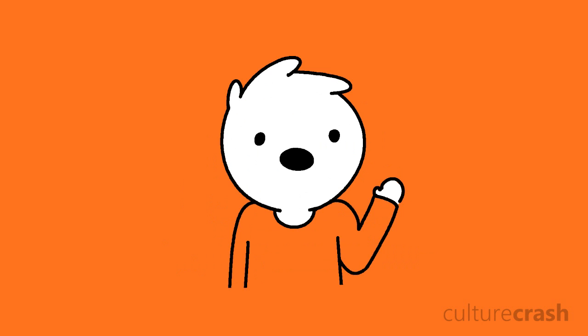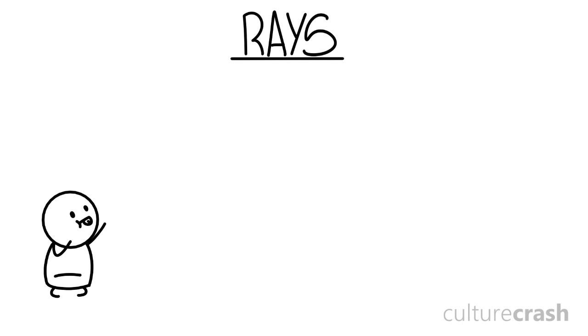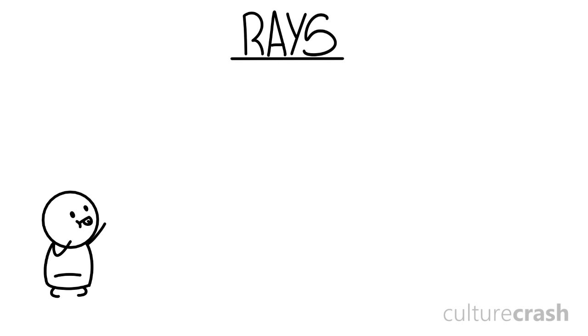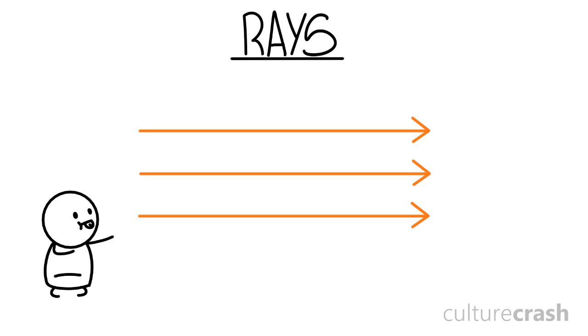To explore how light interacts with different mediums, it's usually easiest to think of it as a ray. Rays are simply thin beams of light that travel in a straight line.